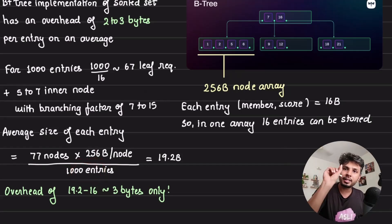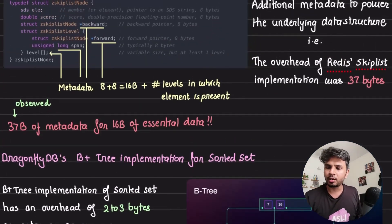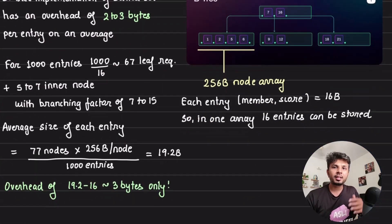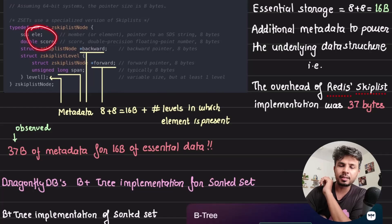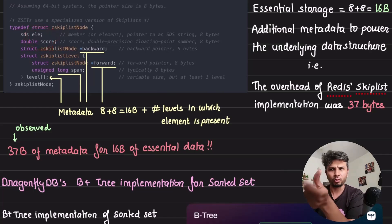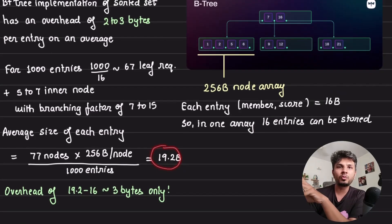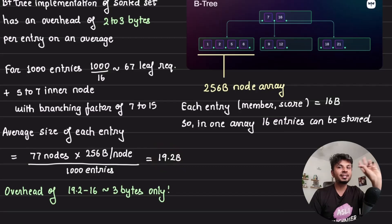256 bytes per node divided by total number of entries, which is 1000 entries, gives me a per element overhead of 19.2 bytes. If I was going for skip list implementation, the overhead was 37 bytes. 37 plus 16 is the total size, what an average size of a node would be.